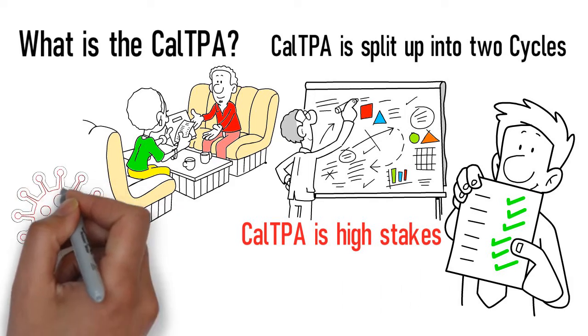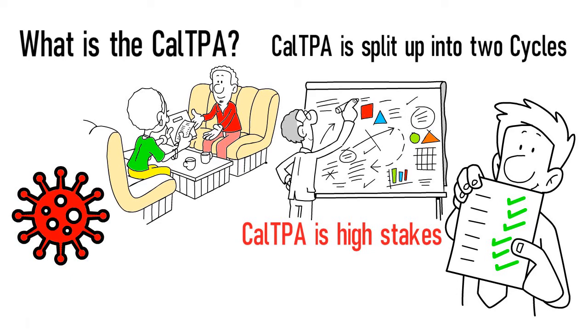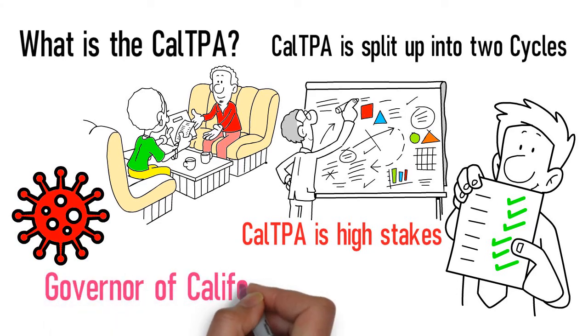Complications from the COVID-19 pandemic may cause some alterations to normal operating procedure per executive orders granted by the Governor of California.